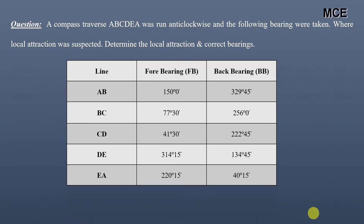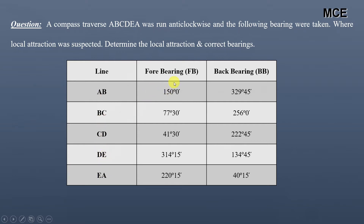Hello and welcome back to Master Civil Engineering. In this video you will learn how to find the local attraction in compass surveying and also how to find the correct bearings of the lines. I have been given a question which states that a compass traverse ABCDEA was run anti-clockwise and the following bearings were taken where local attraction was suspected. We have to find the local attraction and the correct bearings of these lines AB, BC, CD, DE, and EA, for which respective fore bearings and back bearings are given.